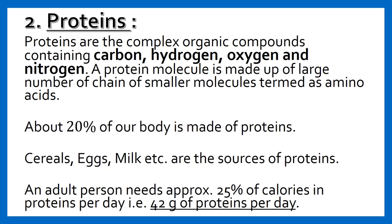The second nutrient is proteins. Proteins are complex organic compounds containing carbon, hydrogen, oxygen, and nitrogen. A protein molecule is made up of a large number of chains of smaller molecules termed amino acids. About 20% of our body is made up of proteins. Cereals, eggs, milk, etc. are sources of proteins. An adult person needs approximately 25% of calories from proteins per day, that is almost 42 grams of proteins per day.